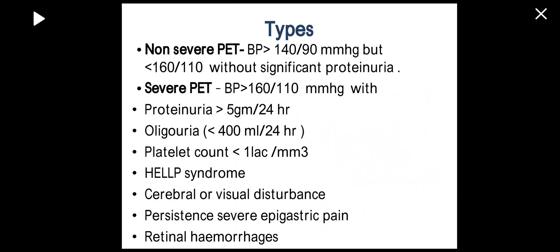Non-severe preeclampsia is BP more than 140/90 mmHg. Severe preeclampsia is BP more than 160/110 mmHg along with severe proteinuria, oliguria (urine output less than 400 ml in 24 hours), platelet count less than 1 lakh per mm³, HELLP syndrome, cerebral and visual disturbances, persistent severe epigastric pain, and retinal hemorrhages.